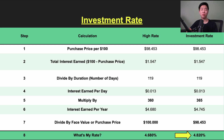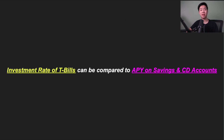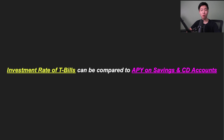This investment rate is probably the most important number for savers, because this is the exact same formula that banks use for their savings accounts and CDs. In other words, this is the number that you can use to compare with the APYs offered by popular banks like Capital One and Ally Bank on their savings products.